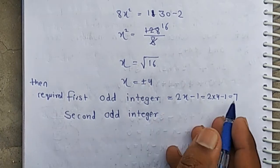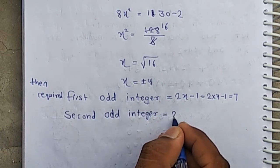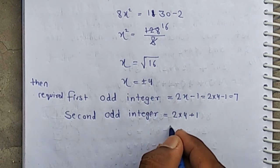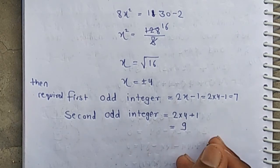Required first odd integer is 7, second odd integer is 2 times 4 plus 1 equals 9. And that is the answer.